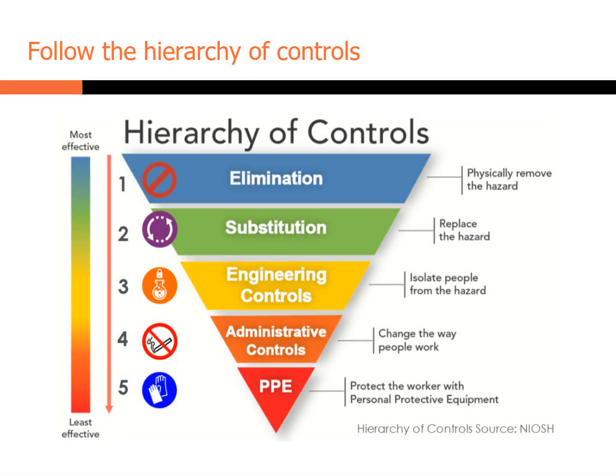Follow the hierarchy of controls to prevent exposure. Can you eliminate or substitute for something that does not contain the irritant of concern? Can an engineering control be used to isolate the product? Can administrative work practices reduce the exposure? Gloves will protect the hands if the irritant cannot be eliminated for the task; however, coveralls may also be needed to protect more of the body.